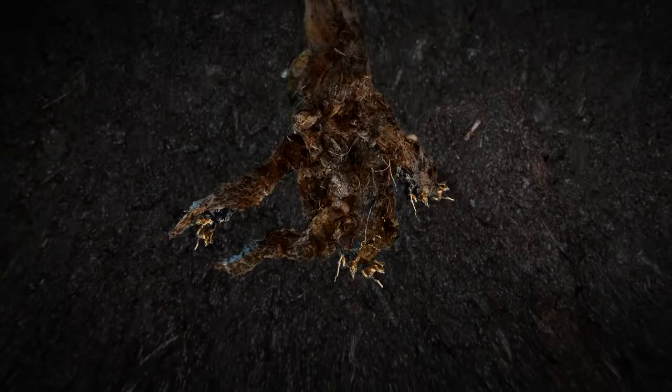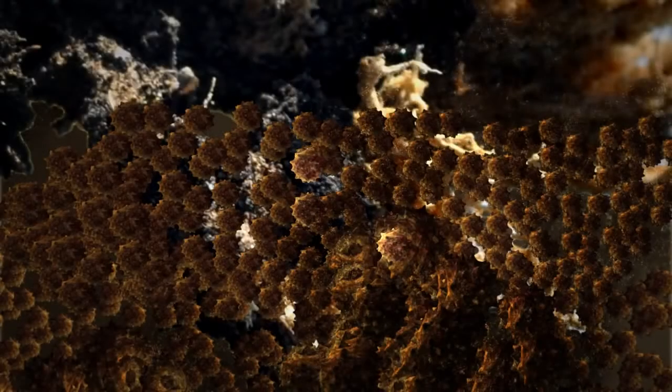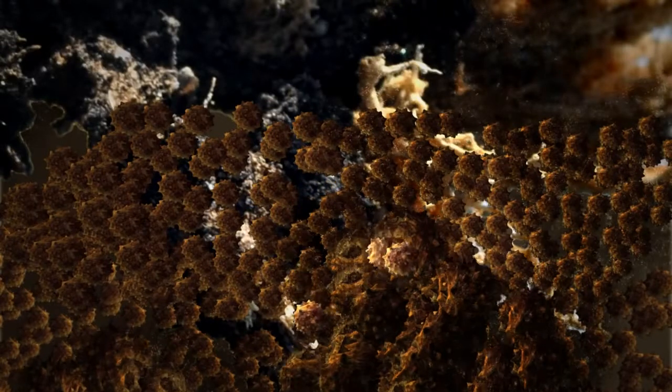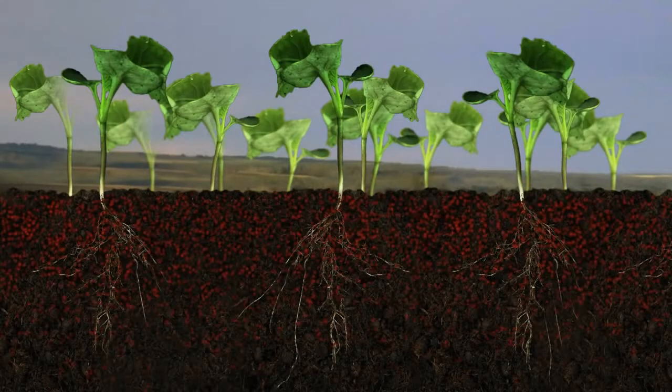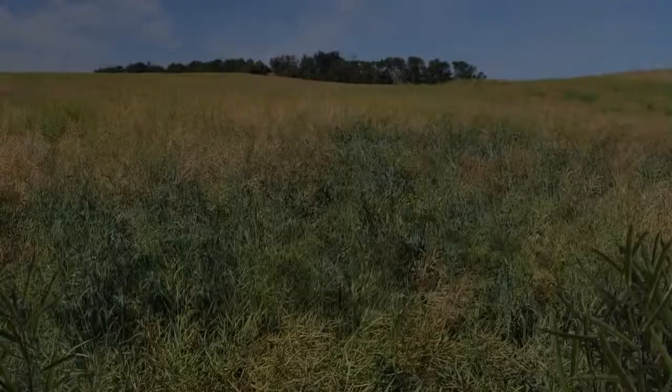As the root senesces, they quickly decay and the masses of resting spores are released back into the soil, waiting for the next crop or susceptible plants to stimulate germination and start the process again.